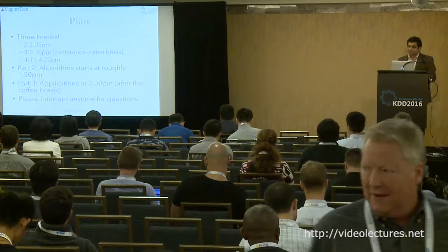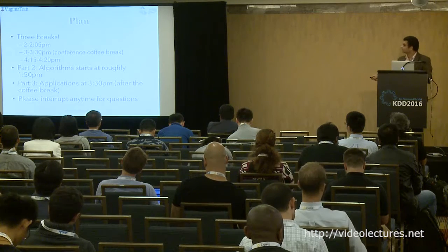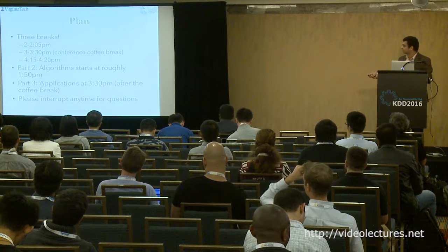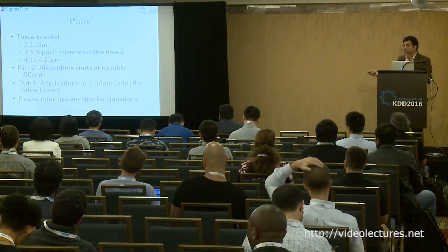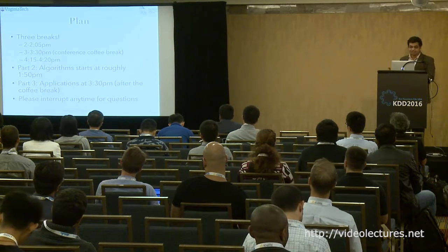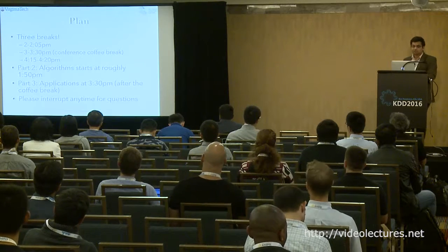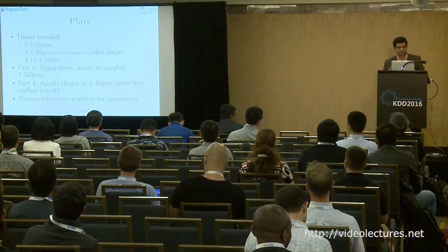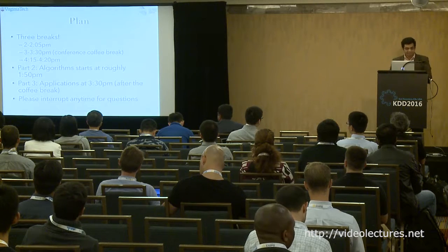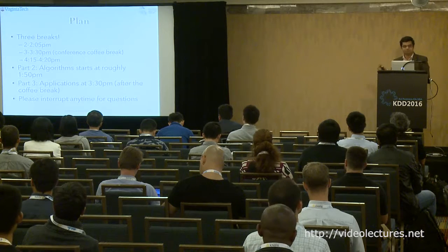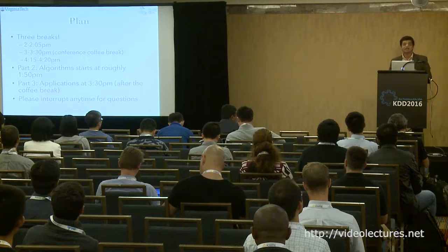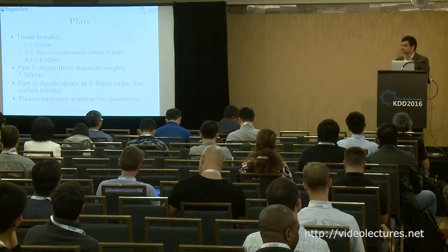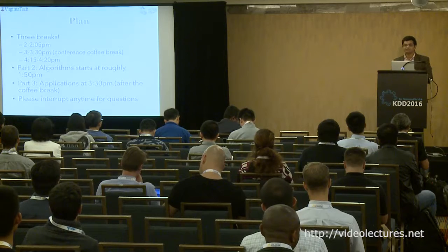The logistics: we'll have three breaks. 2:00–2:05 PM short break, the conference-mandated coffee break from 3:00–3:30 PM, and another break at 4:15–4:20 PM. Part two — the algorithms part — will start roughly at 1:50 PM. The applications part (part three) will start at 3:30 PM after the coffee break. Please interrupt any time for questions. We've tried to ensure coverage of the latest results, state-of-the-art algorithms, methods, and models.